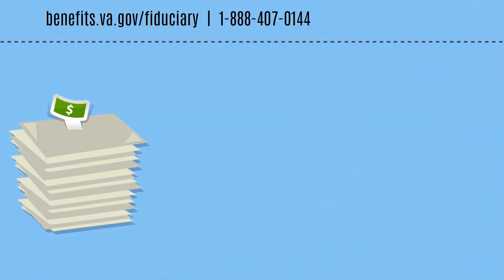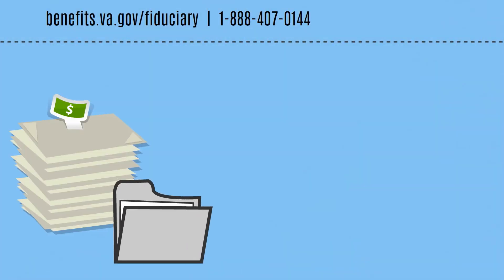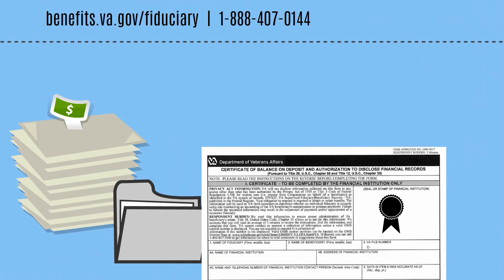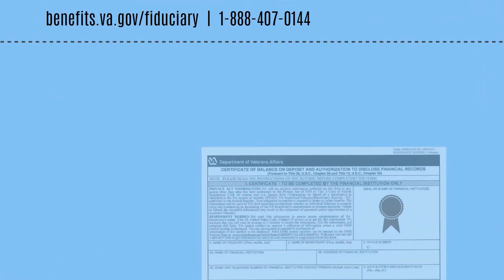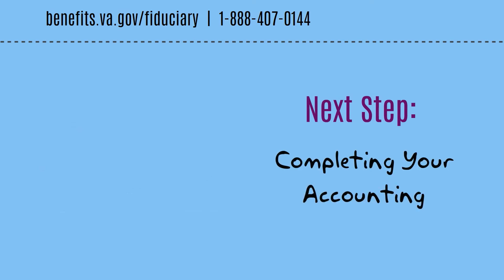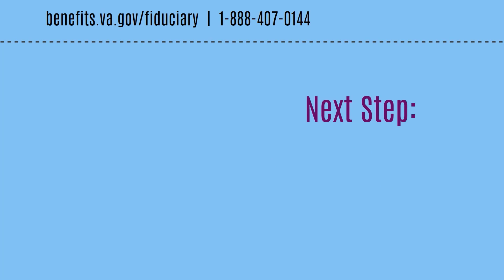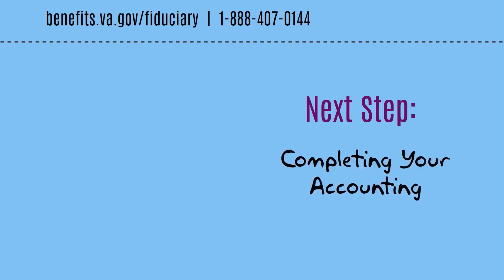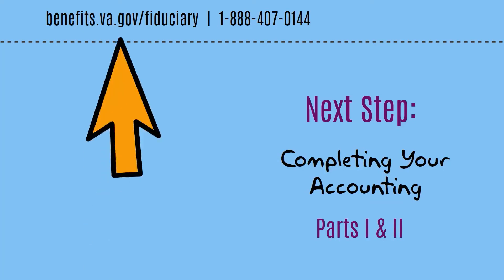After you've gathered all bank statements, other pertinent information, and the completed VA Form 21P-4718A, the next step is to complete your accounting and submit it to the fiduciary hub. For more instructions on how to do that, check out our videos called Completing Your Accounting Parts 1 and 2. You can find both videos at the website.